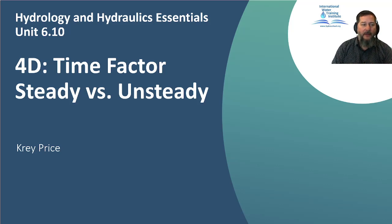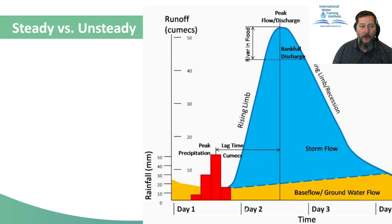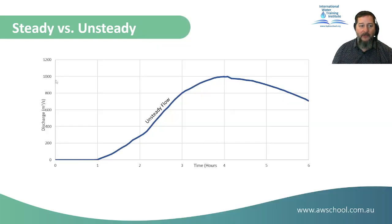We've covered dimensionality and space-time in earlier lectures. I wanted to relate that to the H&H world by drawing some distinctions between steady and unsteady models. When we looked at hydrographs and hyetographs — whether stage or flow hydrographs — they are time series, meaning the x-axis is time, and any movement along it is a delta t or dt. This hydrograph shows discharge on the y-axis, so time appears on both axes. This hydrograph is unsteady, meaning it varies with time.